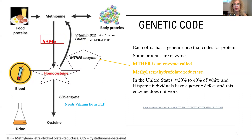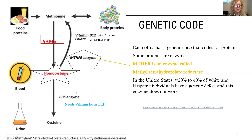When I have a genetic code that codes for proteins, enzymes are proteins. The enzyme we're going to be interested in is called the MTHFR enzyme, known as methyl tetrahydrofolate reductase. In the United States, 20 to 40% of white and Hispanic individuals have a genetic code defect where this enzyme does not work well. This enzyme works with folic acid as methyl tetrahydrofolate and cobalamin — B12 as cobalamin. We want to talk a lot about homocysteine and how important it is not to have it elevated in the blood.